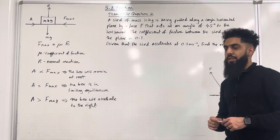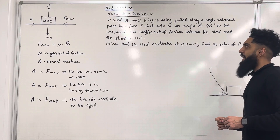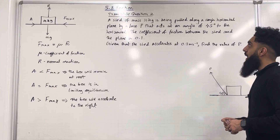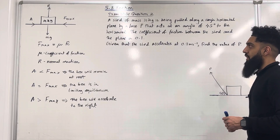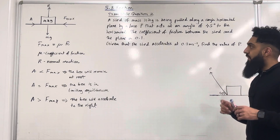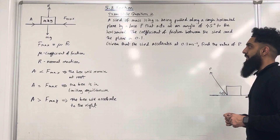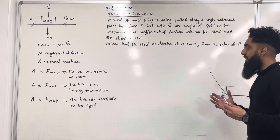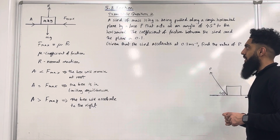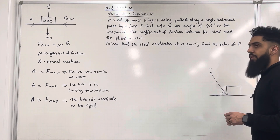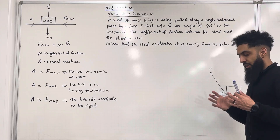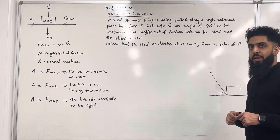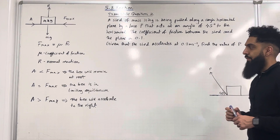Here is exam-style question 2. A sled of mass 10 kg is being pulled along a rough horizontal plane by a force P that acts at an angle of 45 degrees to the horizontal. The coefficient of friction between the sled and the plane is 0.1, so mu equals 0.1. Given that the sled accelerates at 0.3 metres per second squared, find the value of P. Because the sled is accelerating, friction is at its maximum: F max equals mu R.